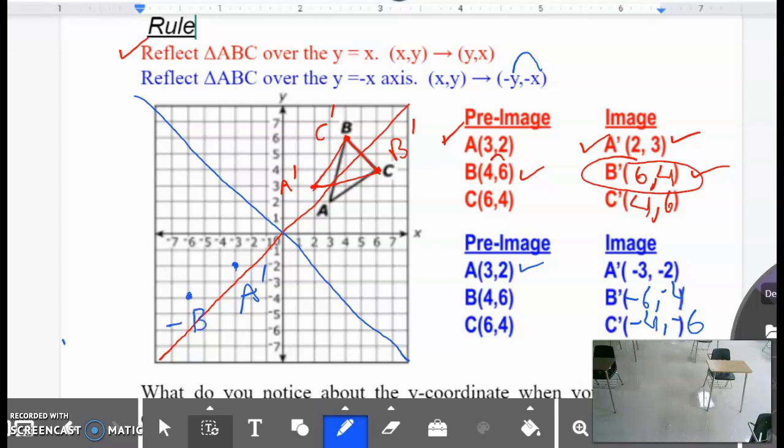That becomes new B. That's supposed to be an apostrophe. And then new C is negative four comma negative six. So negative four comma negative six. One, two, three, four, five, six. Right there. That is new C.